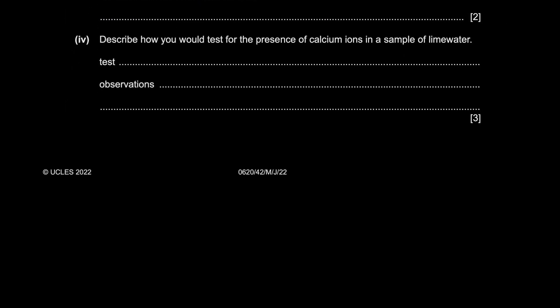Describe how you would test for the presence of calcium ions in lime water. How would you test for it? So my test is going to be add NaOH aqueous to it. Remember your identification of ions or salt analysis. And what will happen? Observations will be a white precipitate is formed.